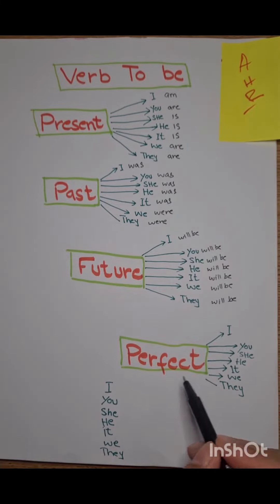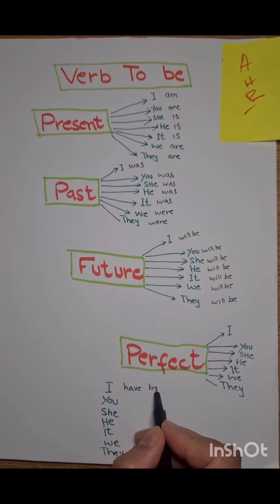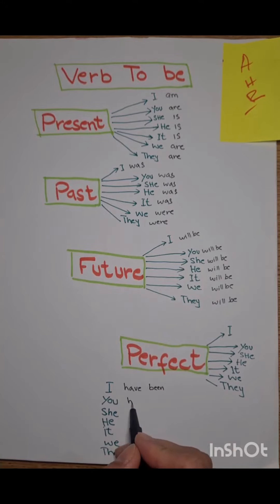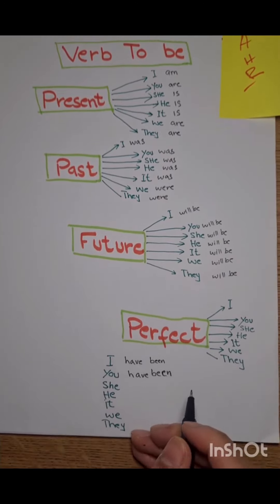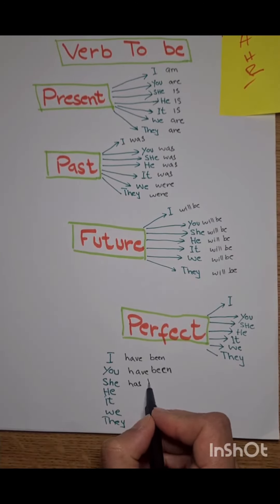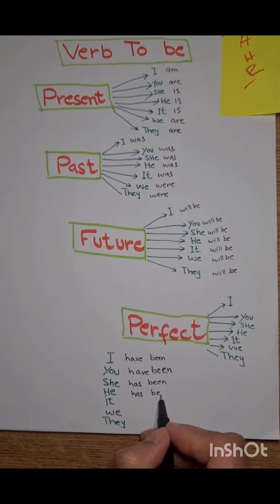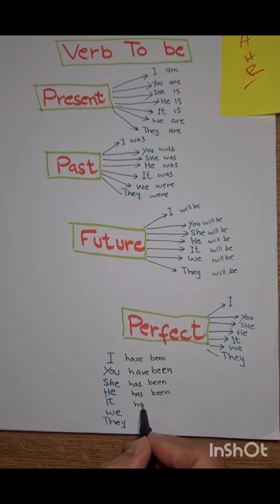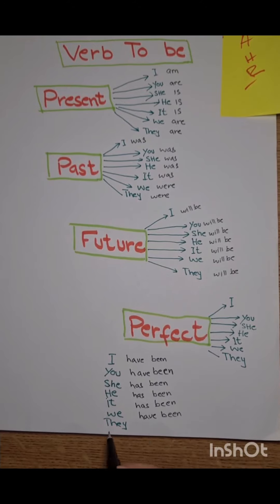And in perfect: I have been, you have been, he has been, he has been, it has been, we have been, they have been.